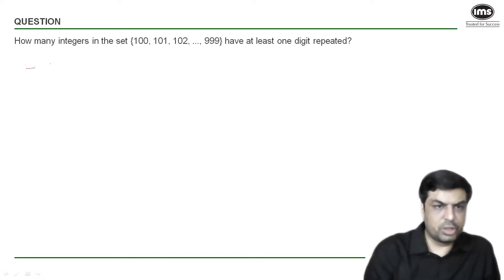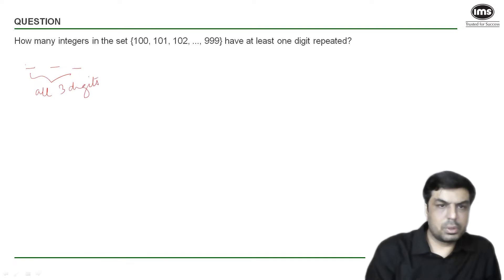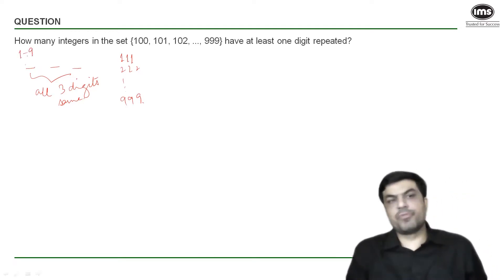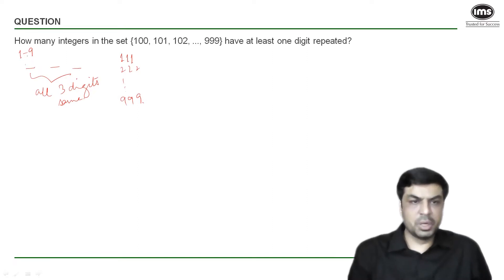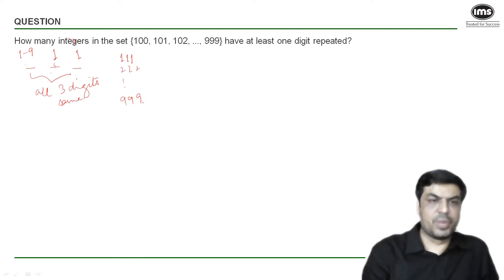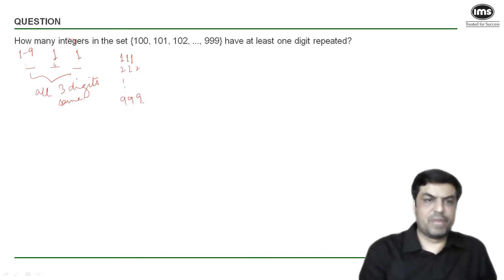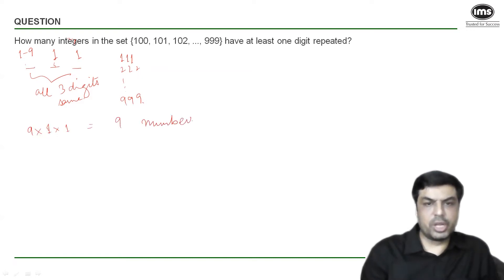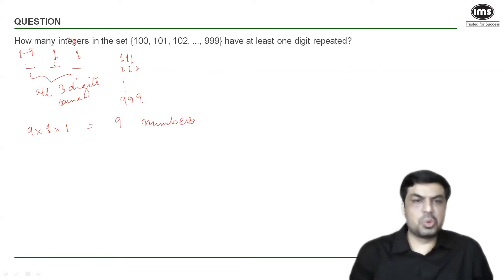For a three-digit number, how many numbers have all three digits the same — like 111, 222, up to 999? For the first digit I have nine options: any digit from 1 to 9, since 0 cannot be used in the first place. The second and third digits are then automatically fixed to be the same. So I have 9×1×1 = 9 such numbers where all three digits are the same.